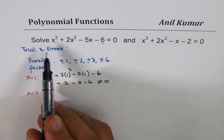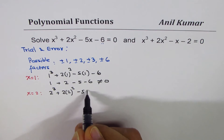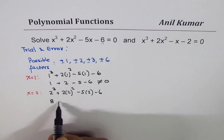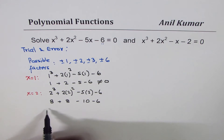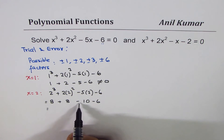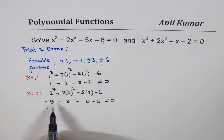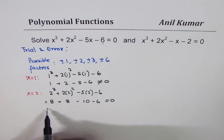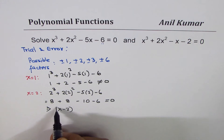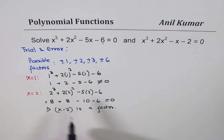Now try x = 2: 2³ + 2(2²) - 5(2) - 6 = 8 + 8 - 10 - 6 = 16 - 16 = 0. Since the expression equals 0 at x = 2, we know that (x - 2) is a factor.